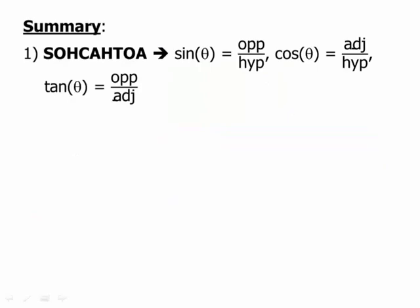In summary, it's good to know SOHCAHTOA, which means that the sine of theta is the opposite over hypotenuse, the cosine of theta is the adjacent over the hypotenuse, and the tangent is the opposite over the adjacent.